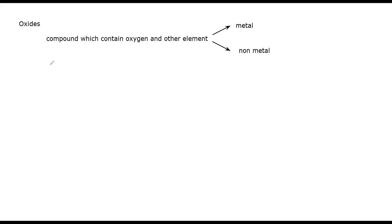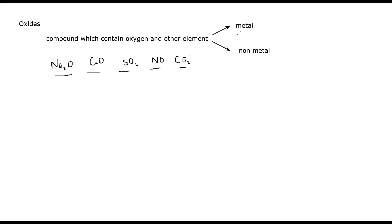For example: sodium oxide, which is Na₂O; calcium oxide, CaO; sulfur dioxide, SO₂; nitrogen monoxide, NO; carbon dioxide, CO₂. So all of these compounds are known as oxides. Why? Because there is oxygen and another element, and this other element can be a metal or a non-metal.